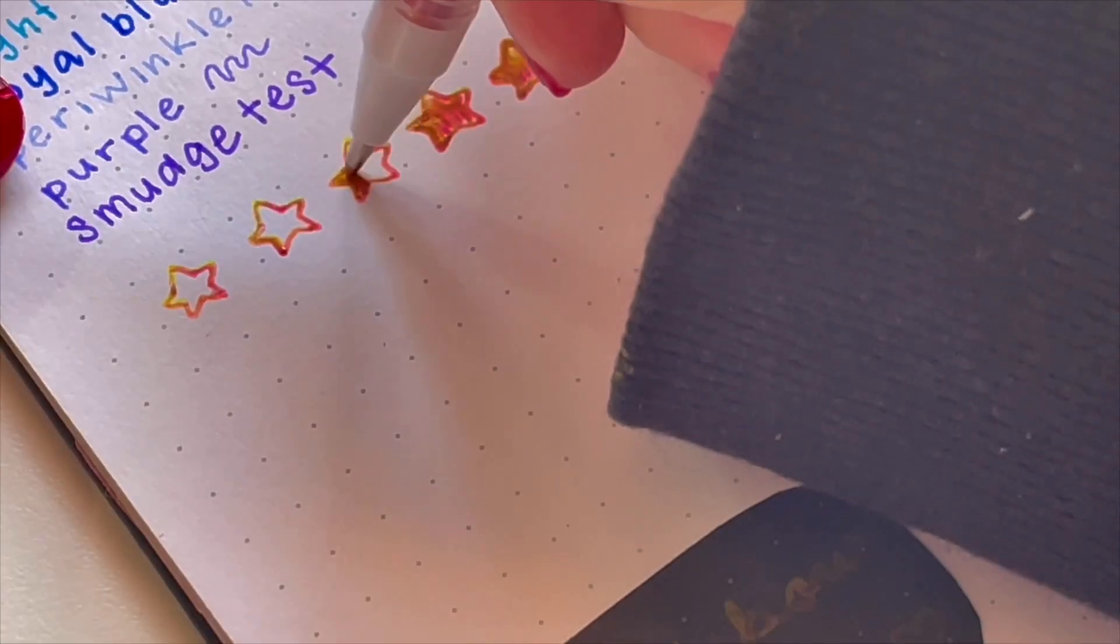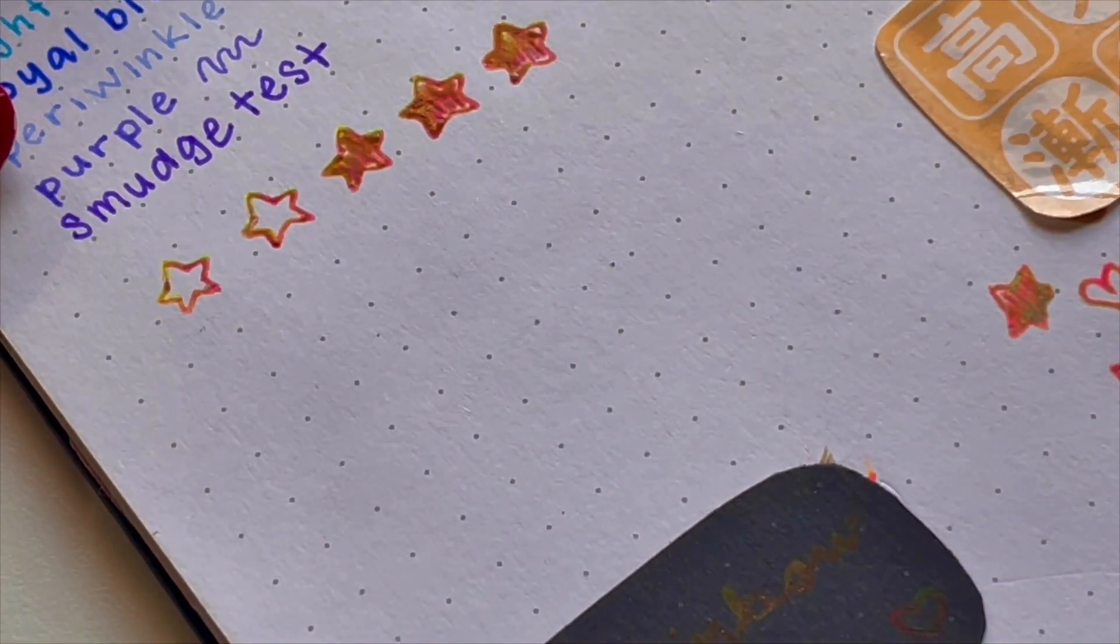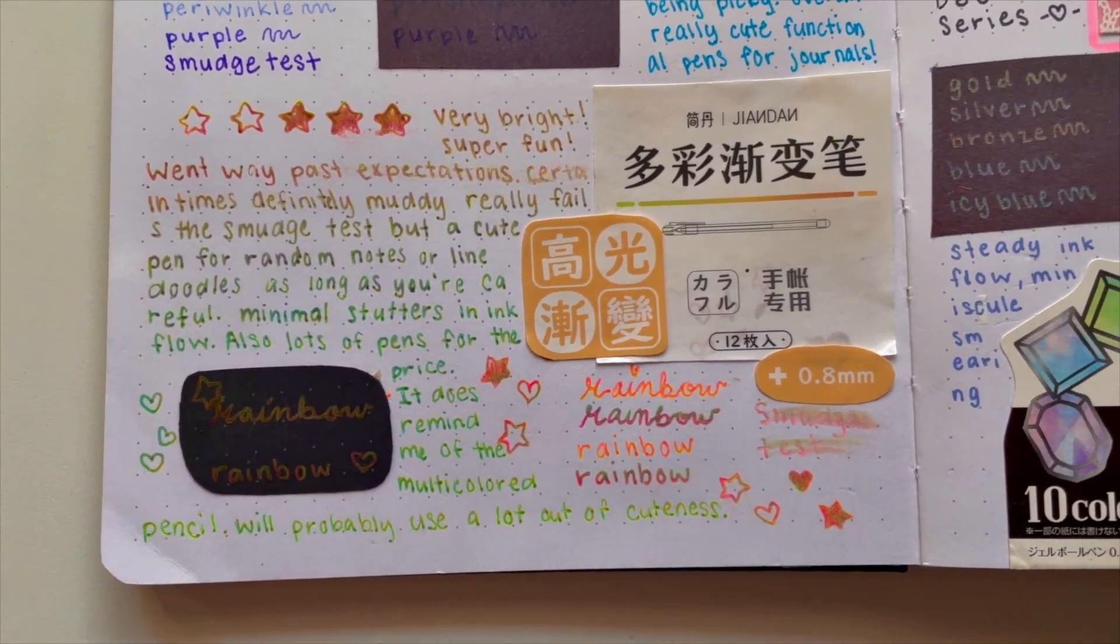Overall, these get 3 out of 5 stars, mainly just losing points for that really awful smudge test, but these are pretty fun and affordable. I got mine off of Amazon. If you search rainbow ink gel pen, you should be able to find them.